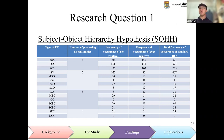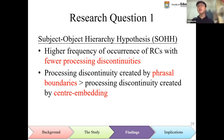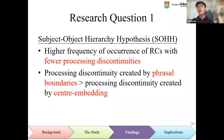The subject-object hierarchy hypothesis was discovered to be partially supported by data of written Hong Kong English. This table presents the number of processing discontinuities as well as the frequency of occurrence of different types of relative clauses in Hong Kong English. In general, there is a higher frequency of occurrence of relative clauses with fewer processing discontinuities. It also appeared that processing discontinuity created by phrasal boundary created more processing difficulty to learners compared to processing discontinuity created by center embedding, in the sense that a type of relative clause with processing discontinuities from phrasal boundaries occurred less frequently than another type with the same number of discontinuities from center embedding.